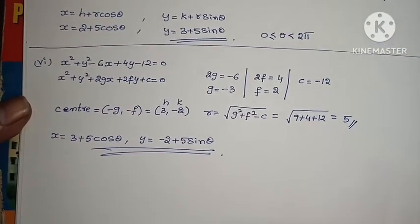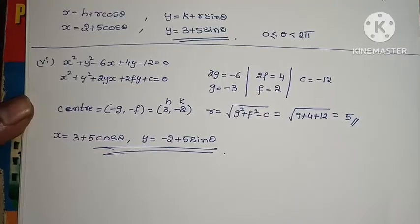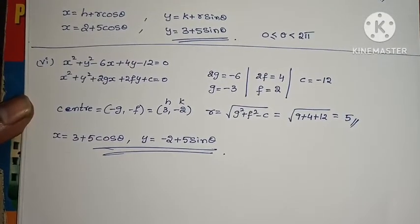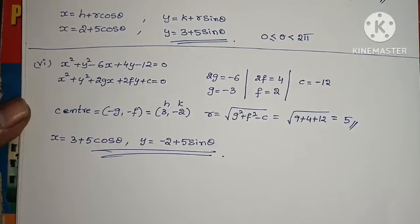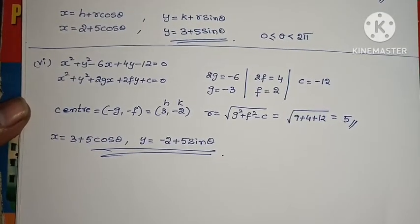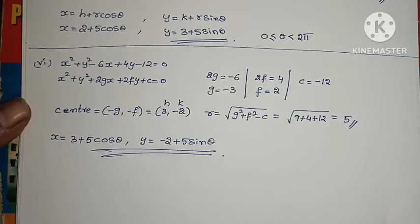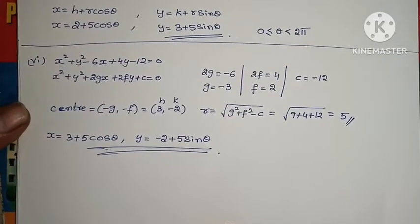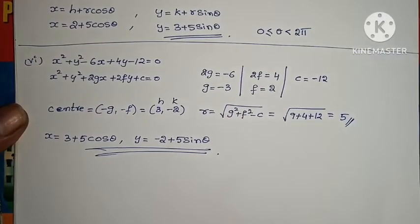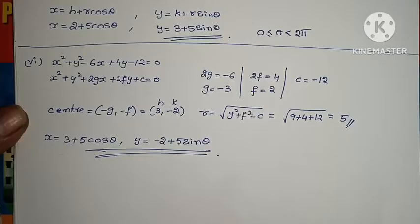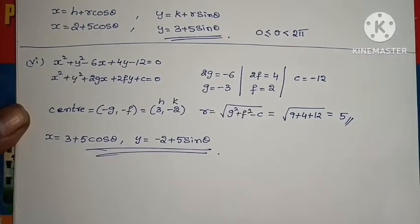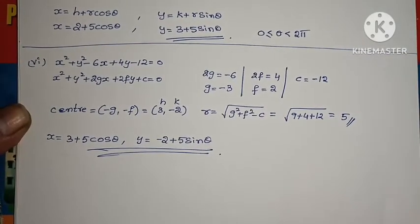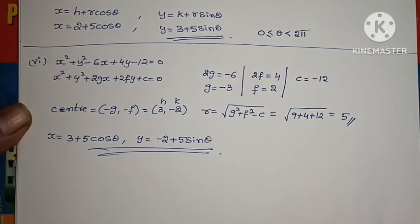This is two marks. All problems in the first Roman numeral section are complete. The second Roman numeral problems will be discussed in the next video. If you have any doubts, comment below, like the video, share it, and subscribe to the channel. Thank you.